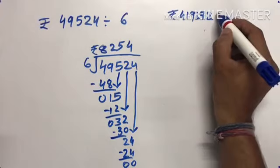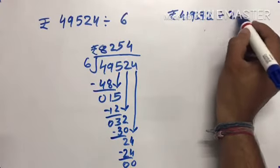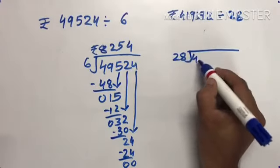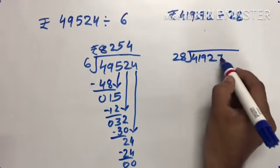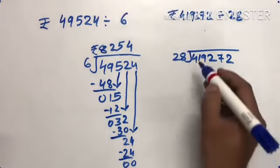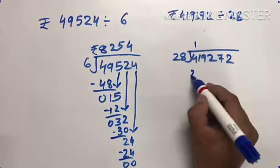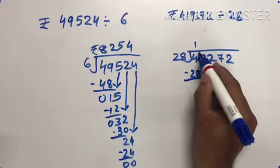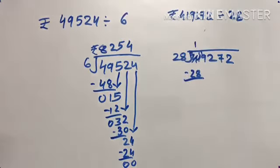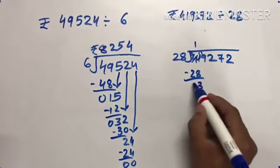Now suppose the question is like this: rupees 4,19,312 divided by 28. 28 times 1 is 28. 41 minus 28 is 13. This will become 11, and we have 3 left. 11 minus 8 is 3, 3 minus 2 is 1.